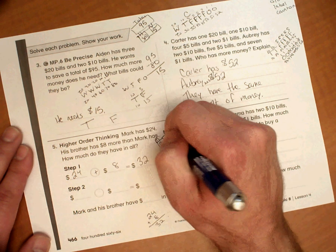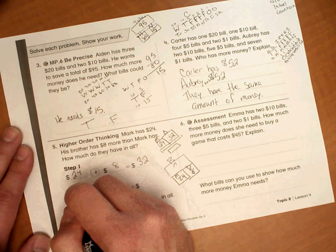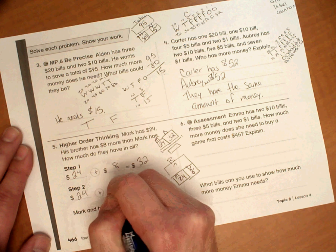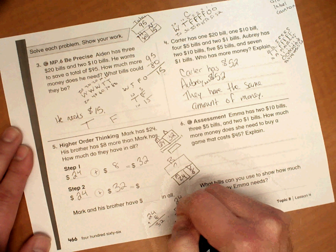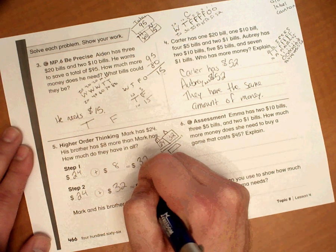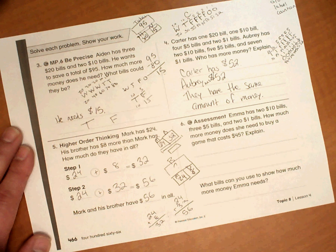So if his brother has $32, how much money do they have altogether? We've got $24 plus $32. So $24 plus $32. And that's going to equal $56. So they have $56 in all.